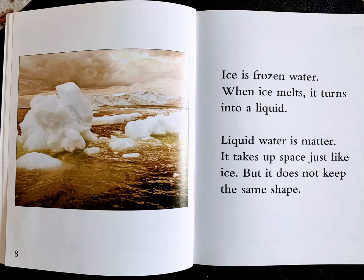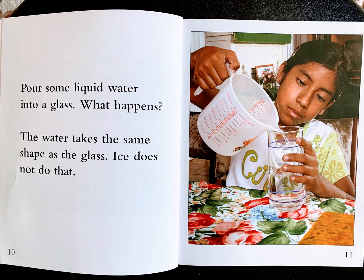When ice melts, it turns into a liquid. Liquid water is matter — it takes up space just like ice, but it does not keep the same shape. Pour some liquid water into a glass. What happens? The water takes the same shape as the glass.